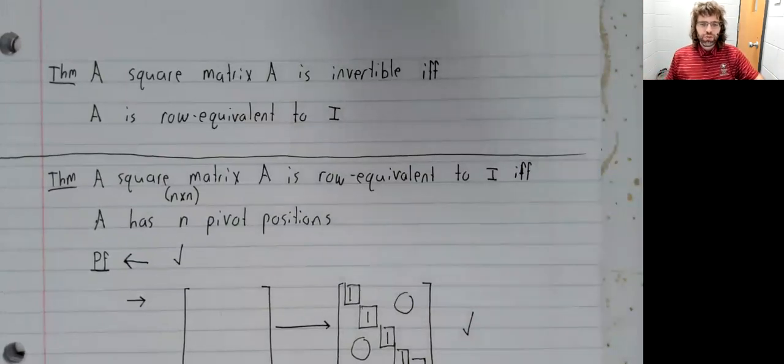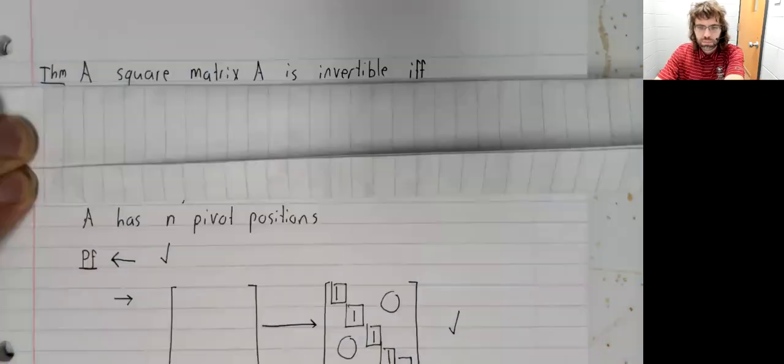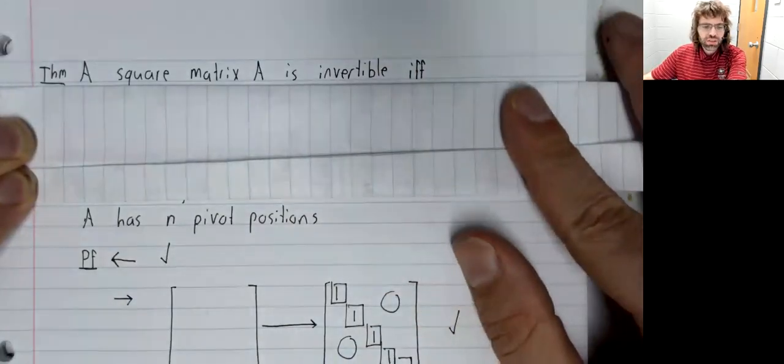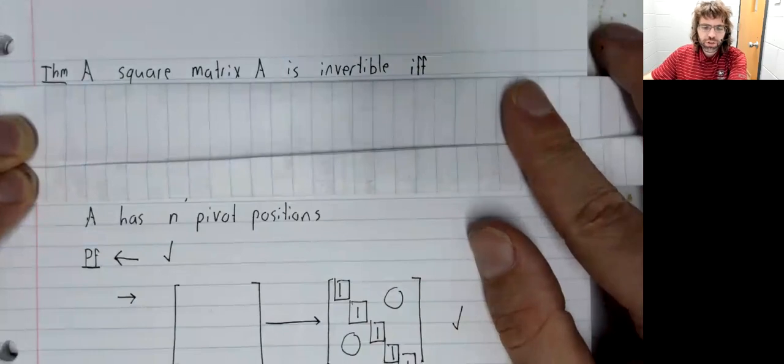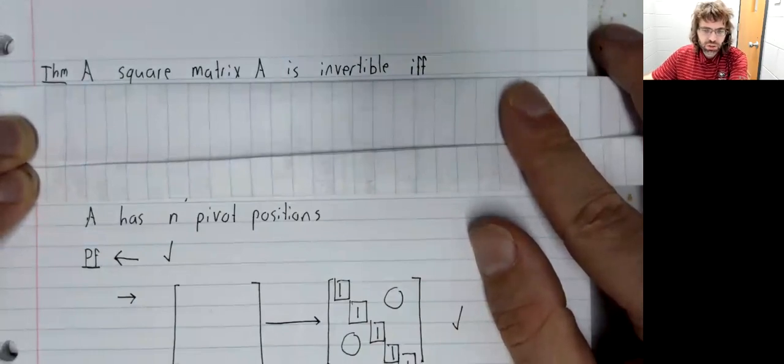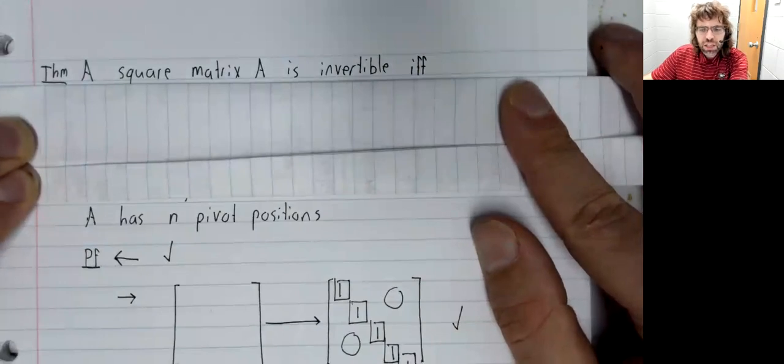Those two facts together tell us that a matrix is invertible if and only if it has n pivot positions. So we've stated two theorems, but we got a third one for free.